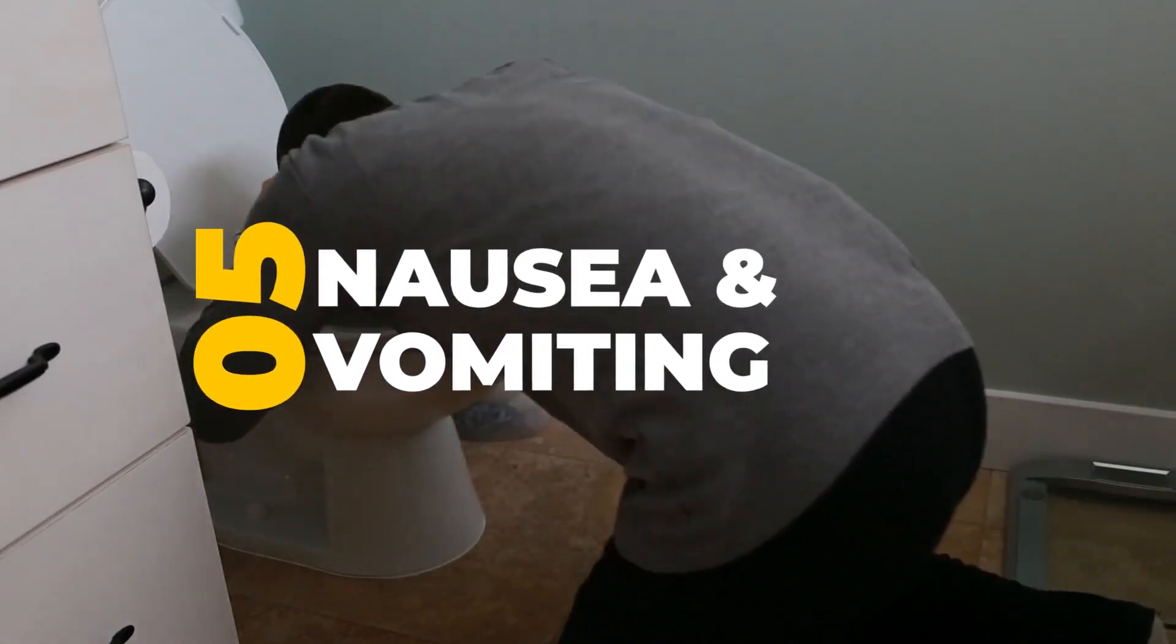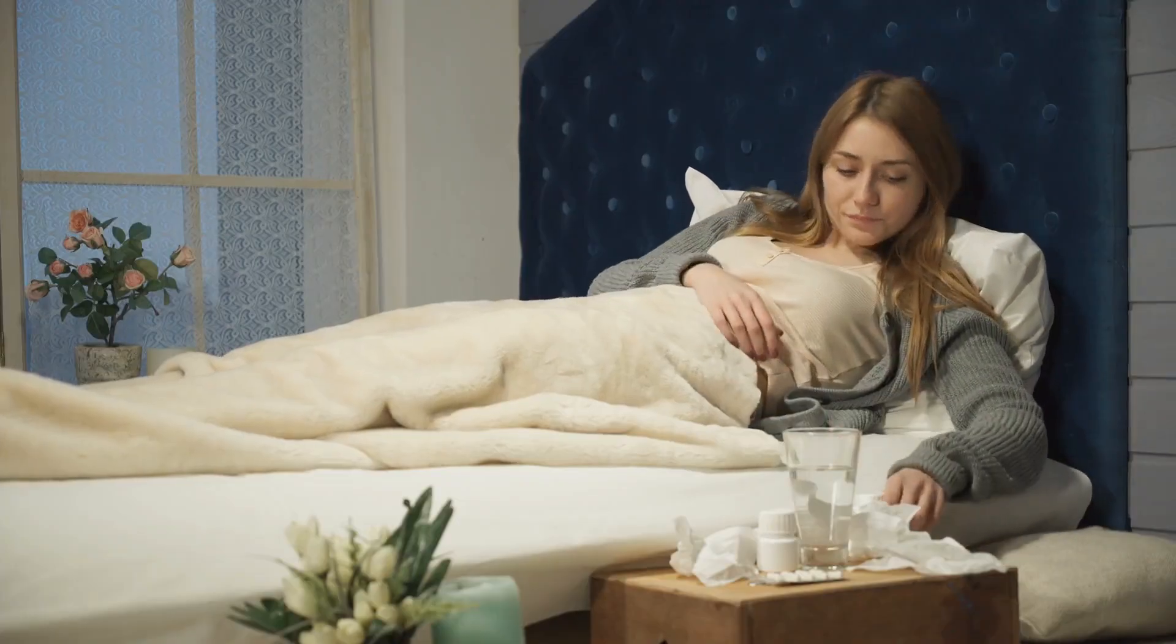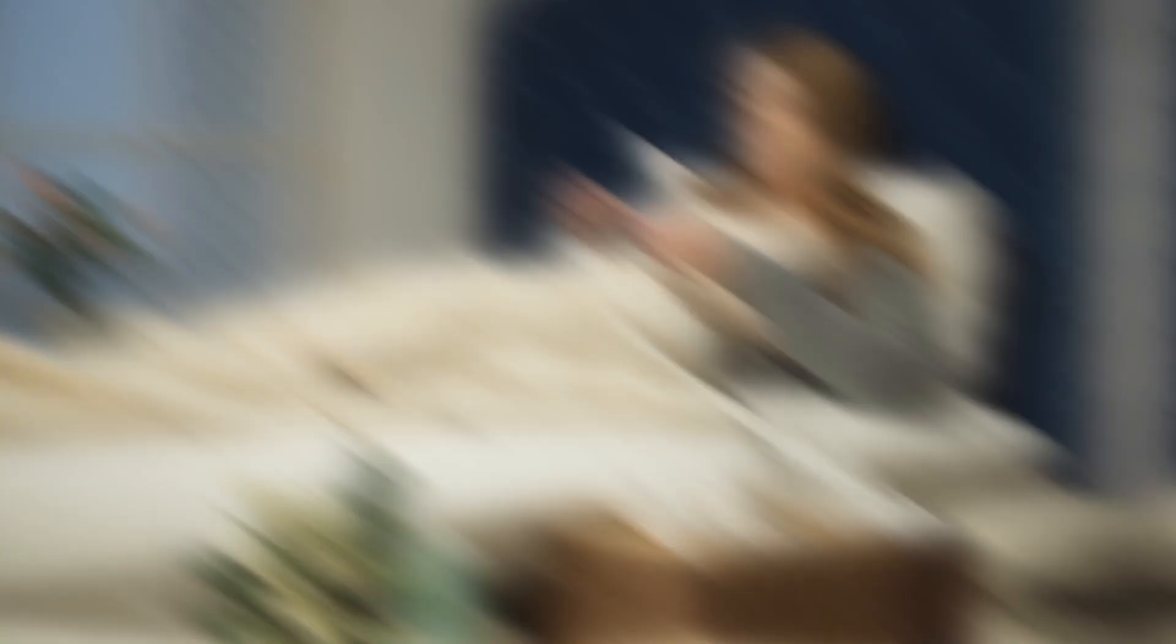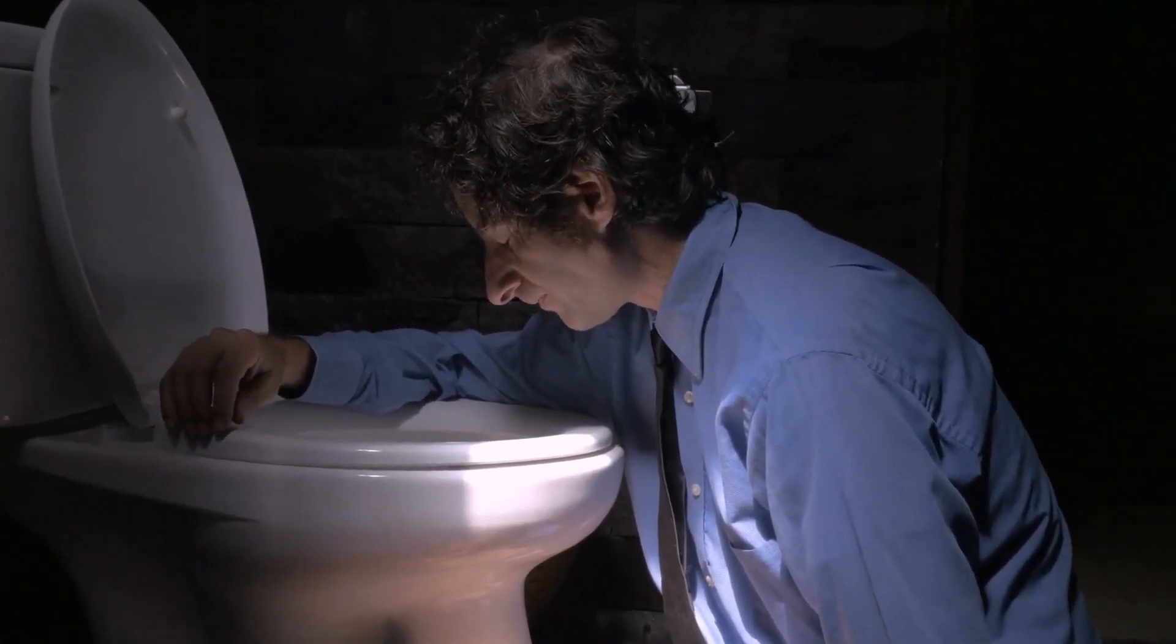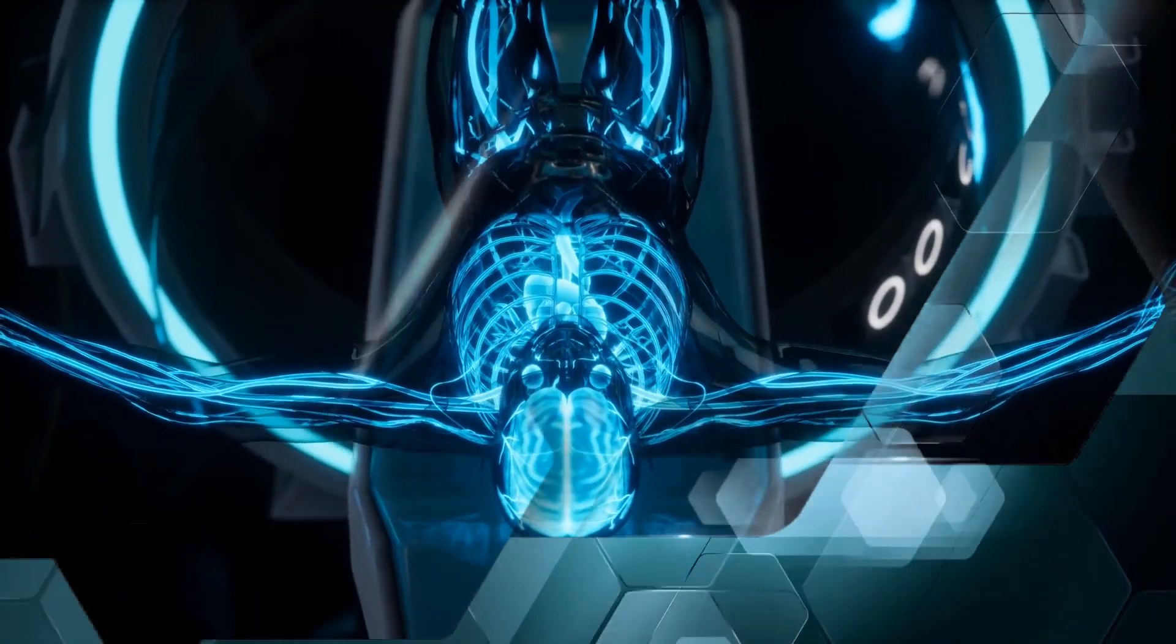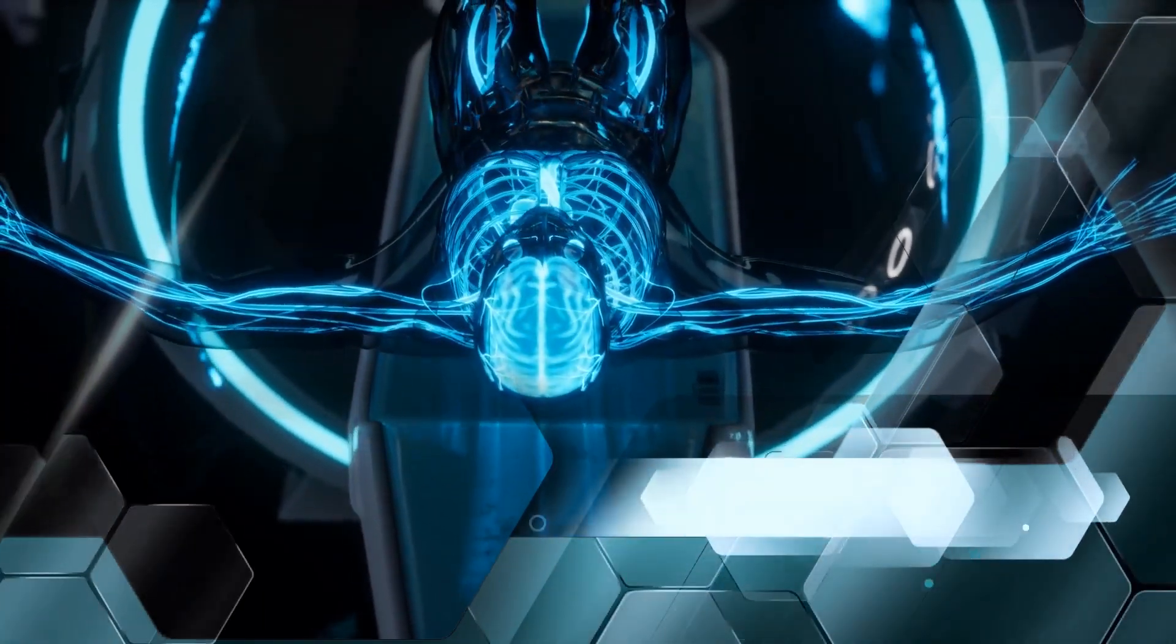Number 5. Nausea and vomiting. Often dismissed as a typical stomach bug or food poisoning, nausea and vomiting can actually signal a more serious threat, DKA. When experienced alongside other warning signs, these symptoms shouldn't be ignored.